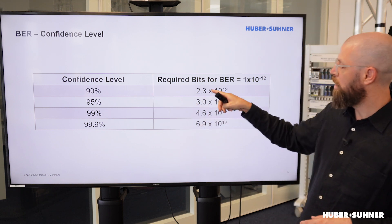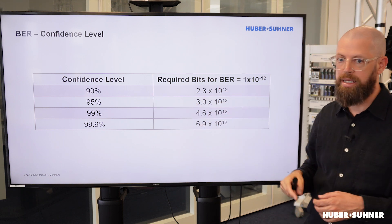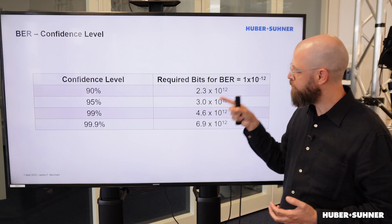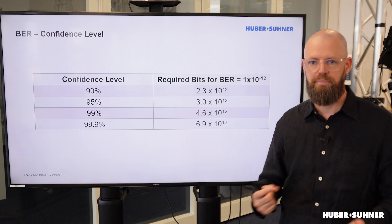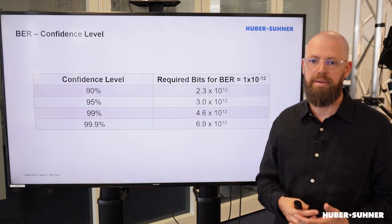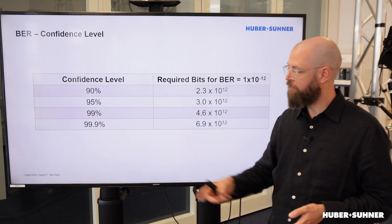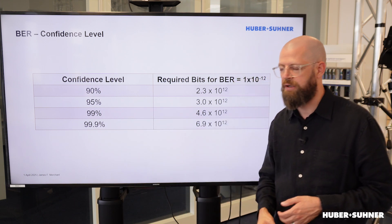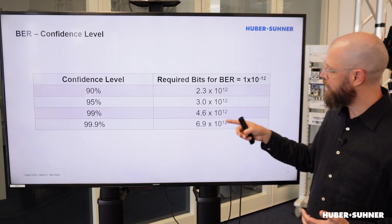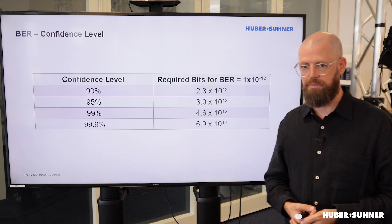For the 90% confidence level, we need to measure a sequence of 2.3 times 10 to the 12th bits — in other words, 2.3 trillion bits — to achieve a confidence level of 90%. If, on the other hand, we want to achieve a confidence level of 99.9%, we need to measure a sequence of 6.9 trillion bits.